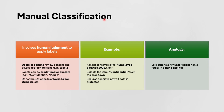The first one is manual classification. An employee or admin looks at their document and decides what level they should give it. For example, a manager saving a document called 'employee salary' manually tags it as confidential using the dropdown in Microsoft Word or Excel. It's like putting a private sticker on a folder in a filing cabinet.